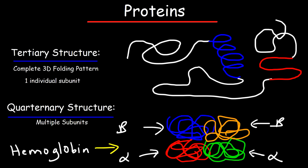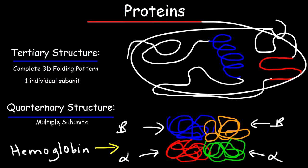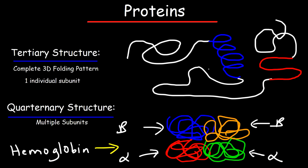Next up we have the tertiary structure which represents the three dimensional complete folding pattern of the protein. And so here's the visual illustration of it. So we could see some areas it's just a straight chain. Here we have an alpha helix and here we have a beta pleated sheet. Now the tertiary structure is one individual subunit.